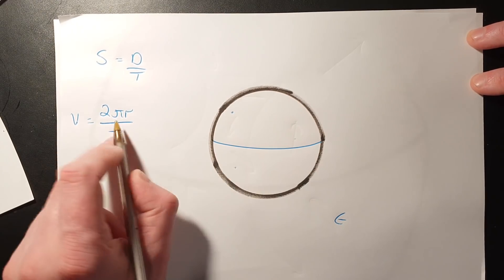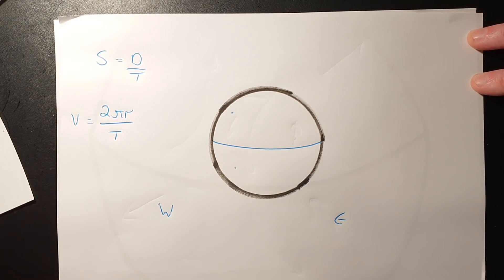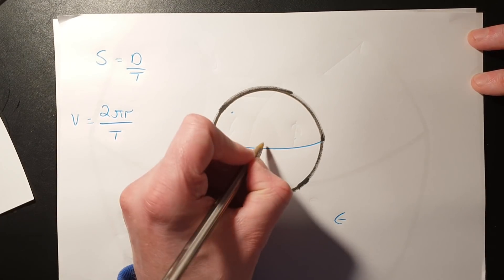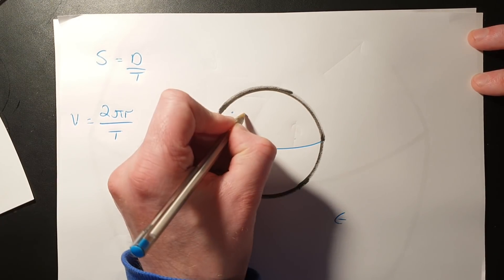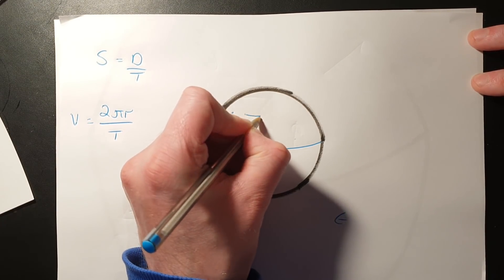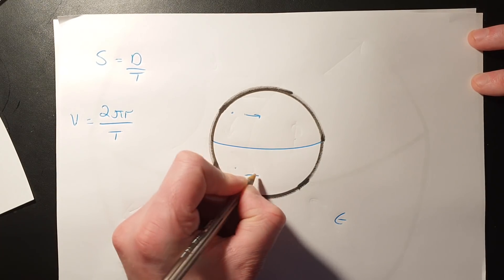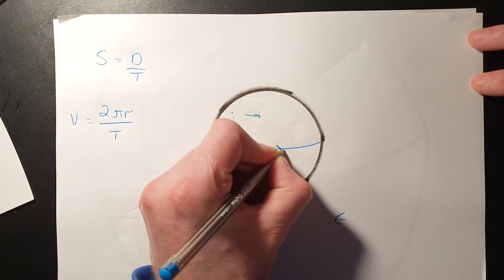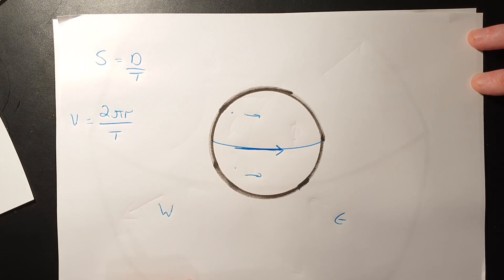At the equator, where the radius is biggest, that's where I'm travelling the fastest — around about 1,000 miles an hour. It's going to travel slower further north or south, and much, much faster around the equator.